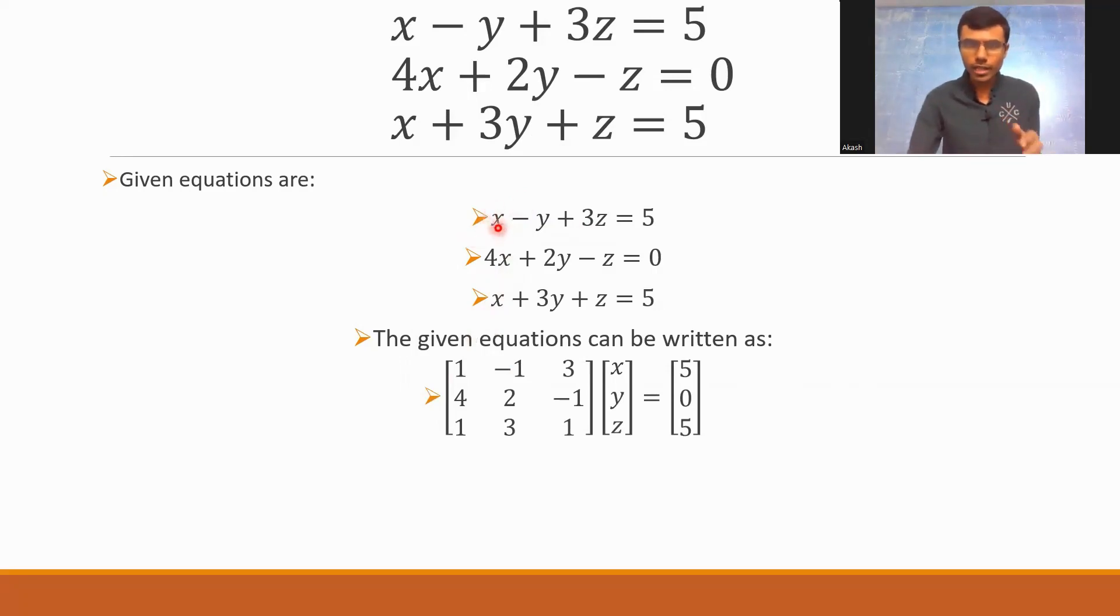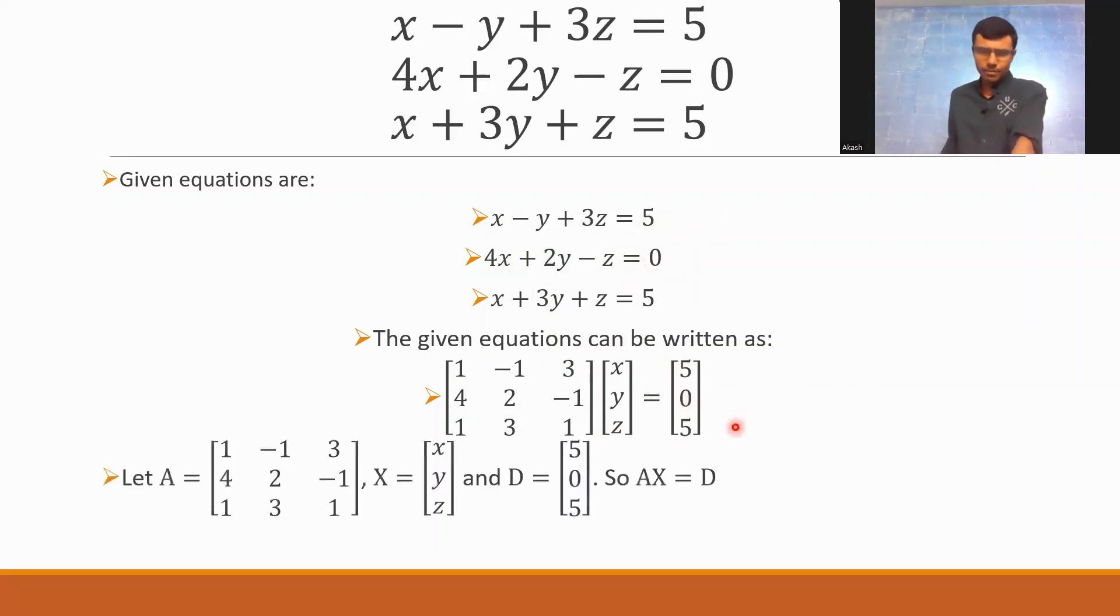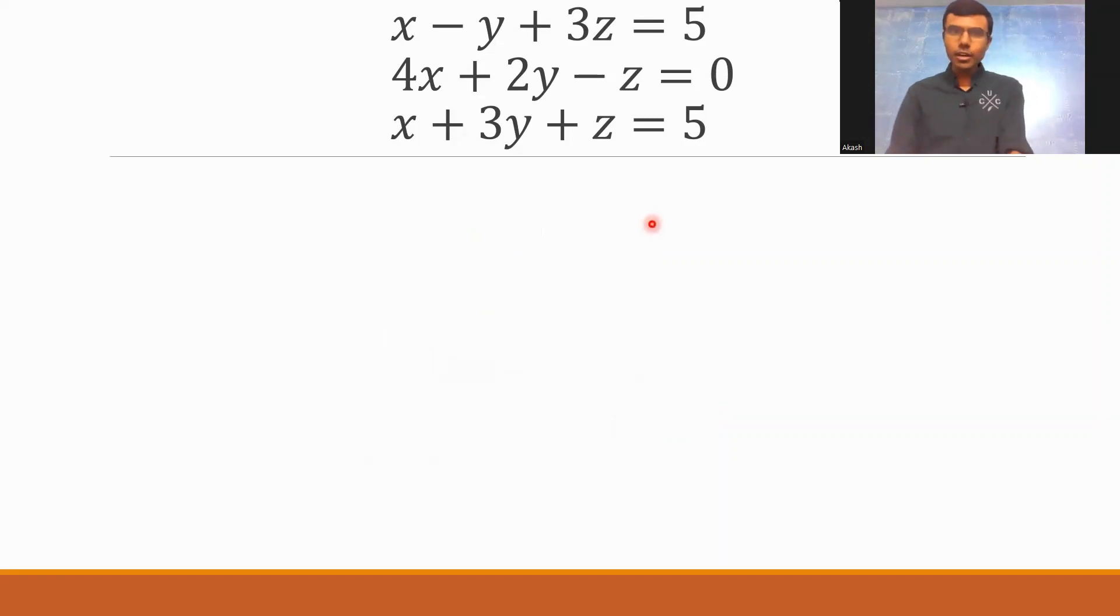Here the coefficient of x is 1, that's why here there's 1, and here the coefficient of y is minus 1, and here the coefficient of z is 3, so 1 minus 1, 3. Likewise 4, 2 minus 1, and 1, 3, 1. And then if you multiply this with small x, small y, small z, this will be equal to 5, 0, 5. That's it. This is a matrix equation. I'm going to take the first matrix as capital A, the second one is capital X, and the third one is capital D. So ultimately what is the equation that I would get? Capital A times X is equal to D. That's right. Now let's move forward.